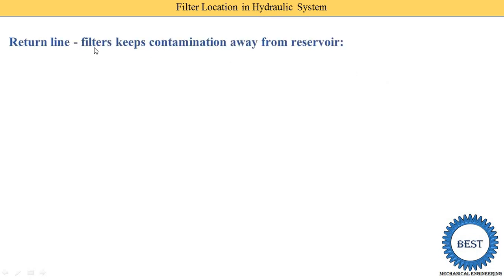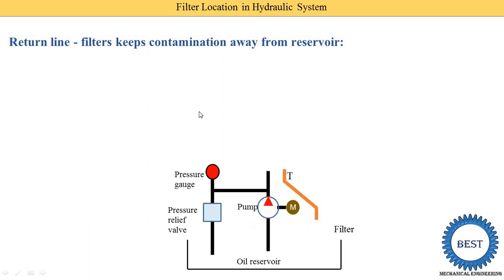The third location is the return line filter. Return line means the oil supplied from the pump goes through the directional control valve and actuators, and when the oil returns from the actuators through the directional control valve, a filter is provided on that return line. The return line filter keeps contamination away from the reservoir. It is considered the best option because contamination is removed at the outlet of the system before the oil re-enters the reservoir.